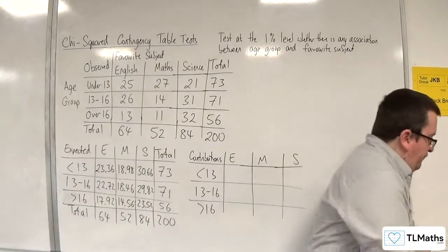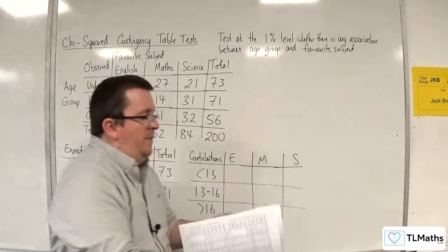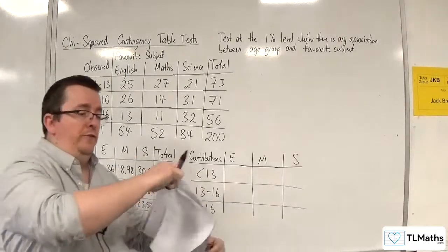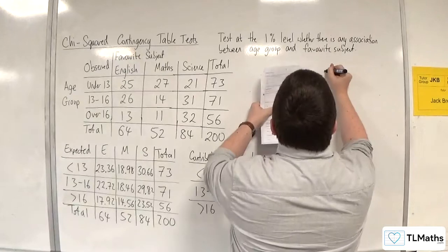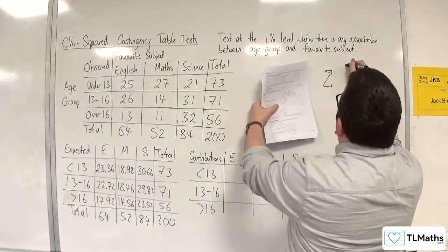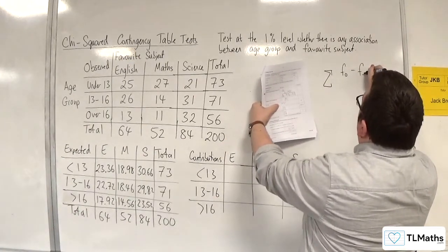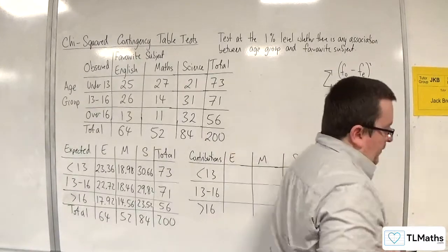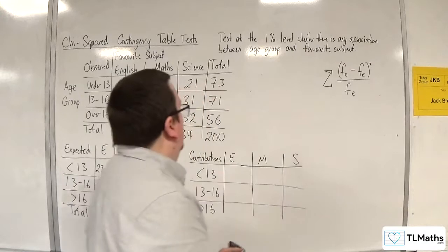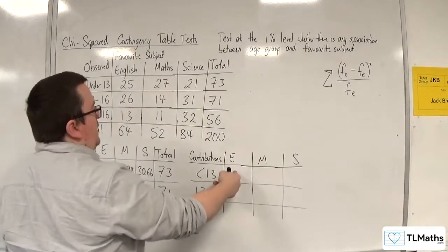So remember that the calculation for this is in the formula booklet, page 11, about mid-page. So the chi-squared statistic is the sum of the observed frequencies take away the expected frequencies, all squared, divided by the expected frequencies.